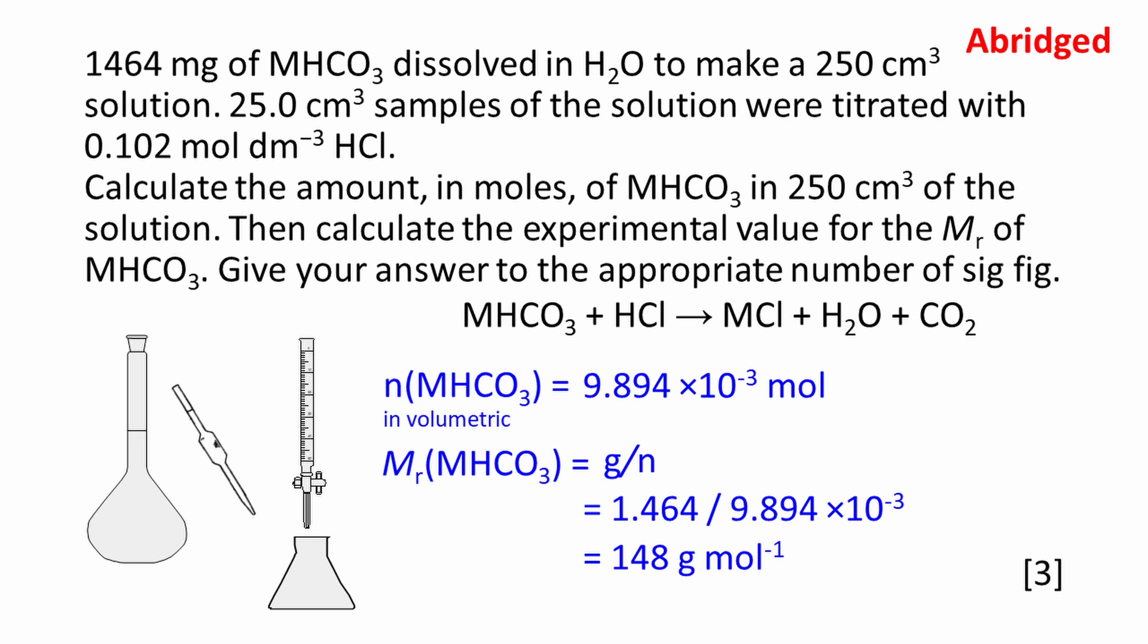Amount in moles is equal to mass divided by molar mass. This equation can be rearranged to find a molar mass, MR. The mass of MHCO3 is given in milligrams. Convert this to grams by dividing by 1000. The molar mass works out to be 148 grams per mole, given to three significant figures. This is consistent with the data in the question.